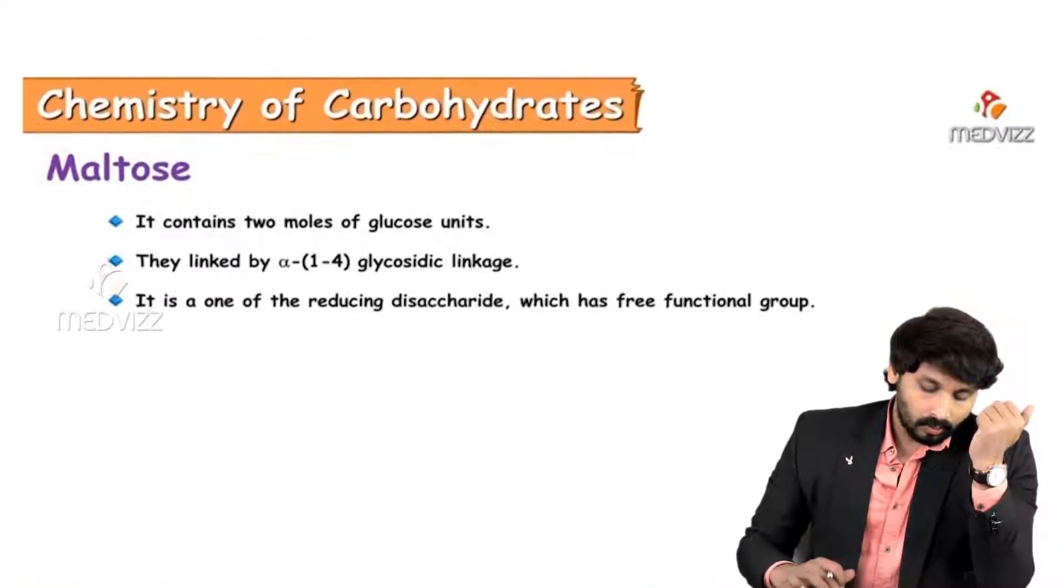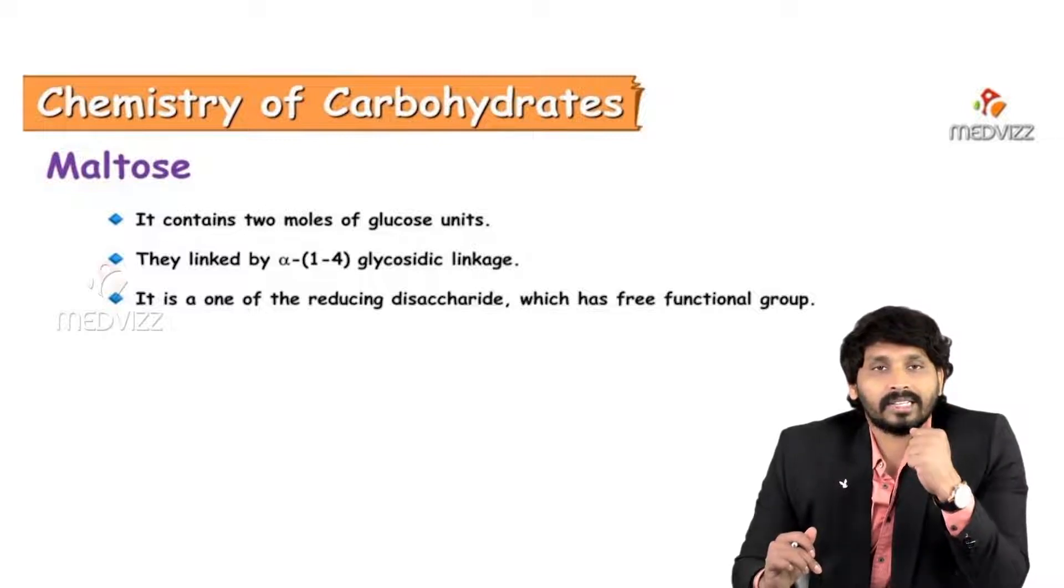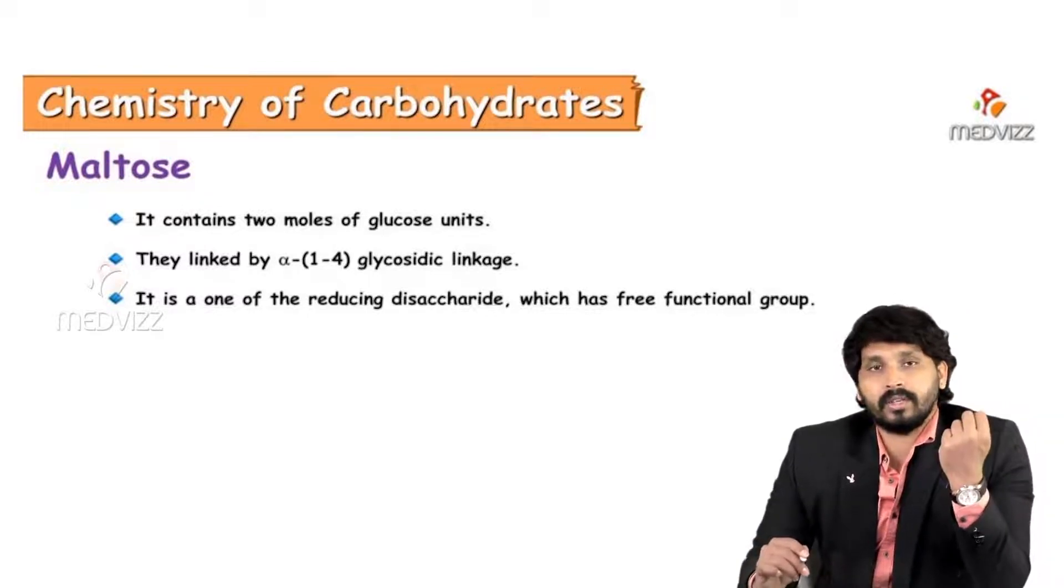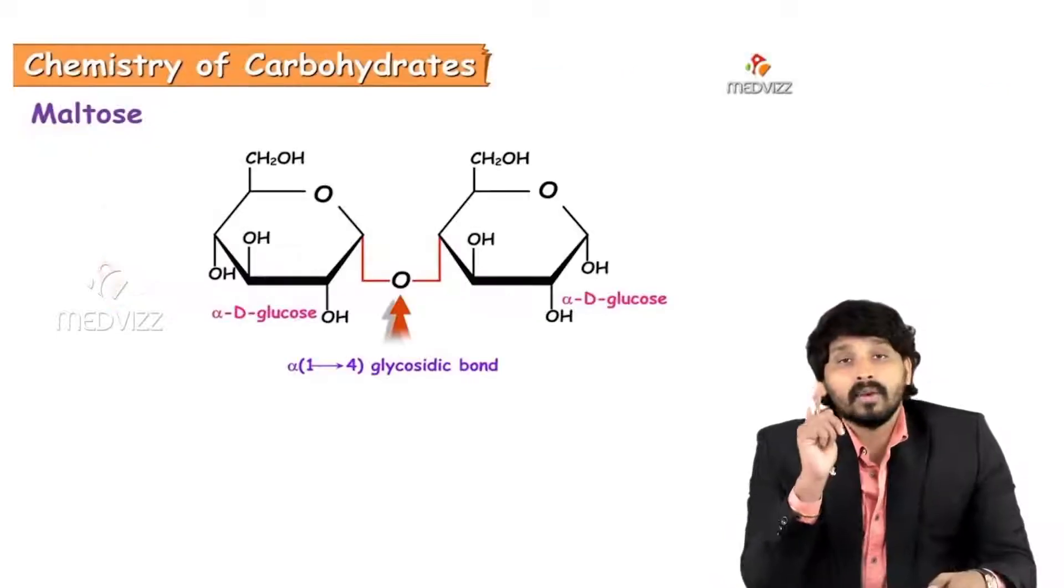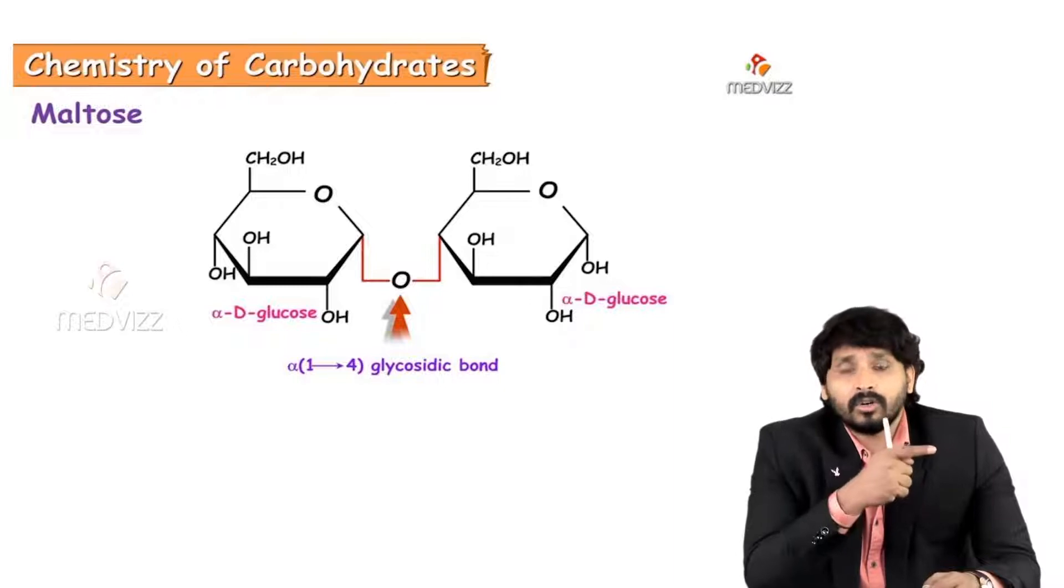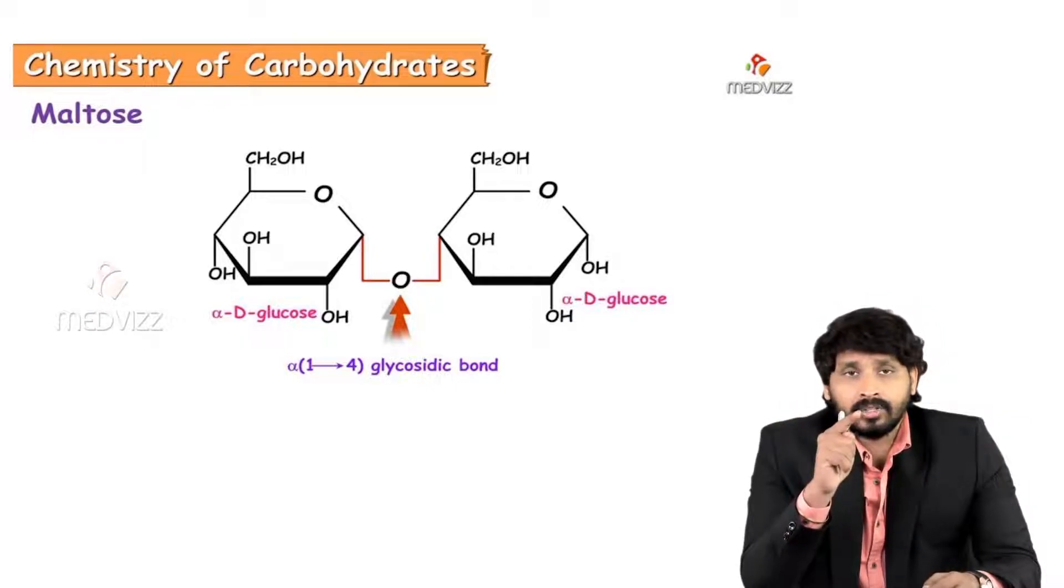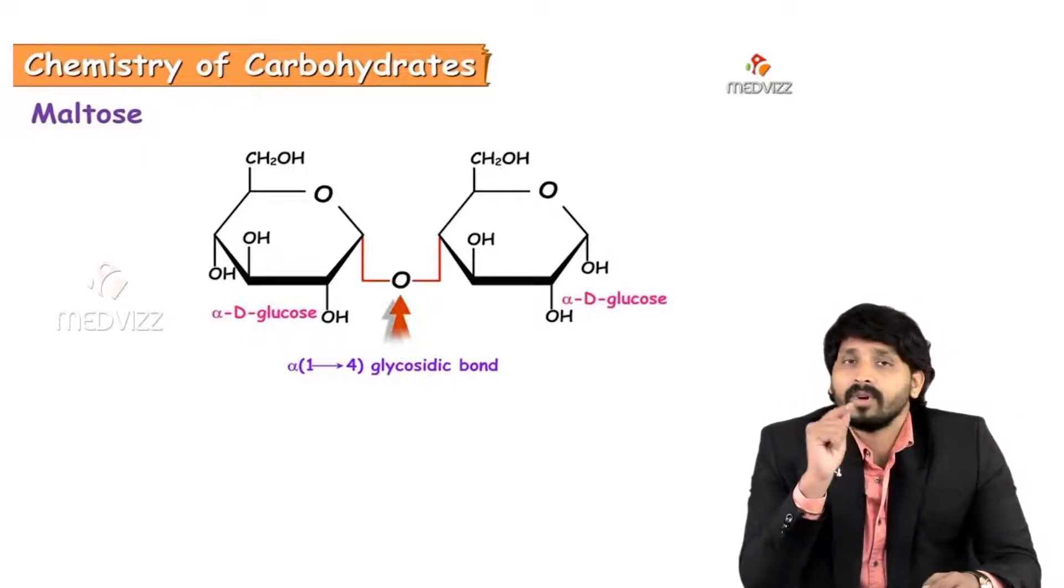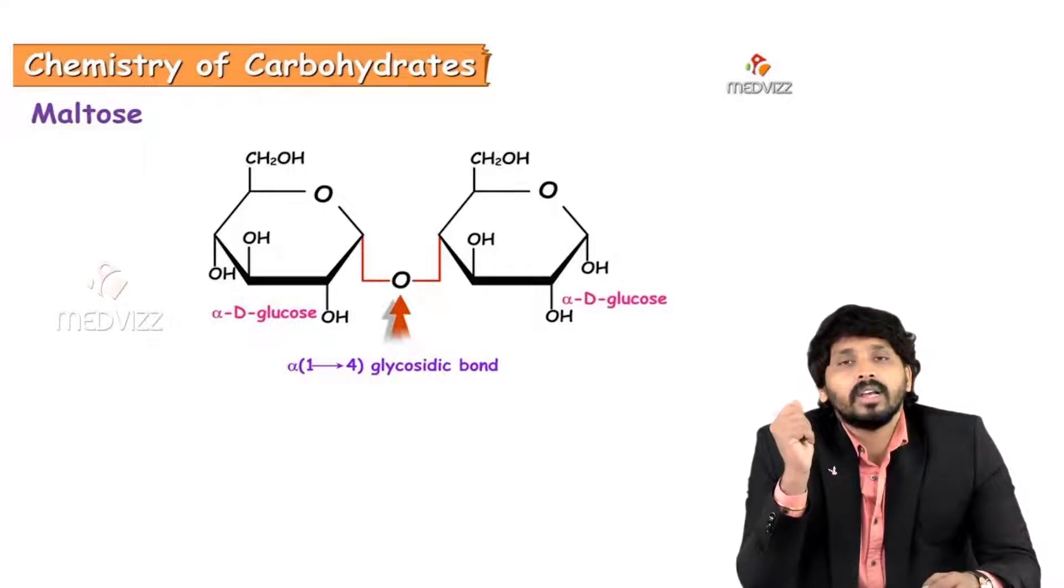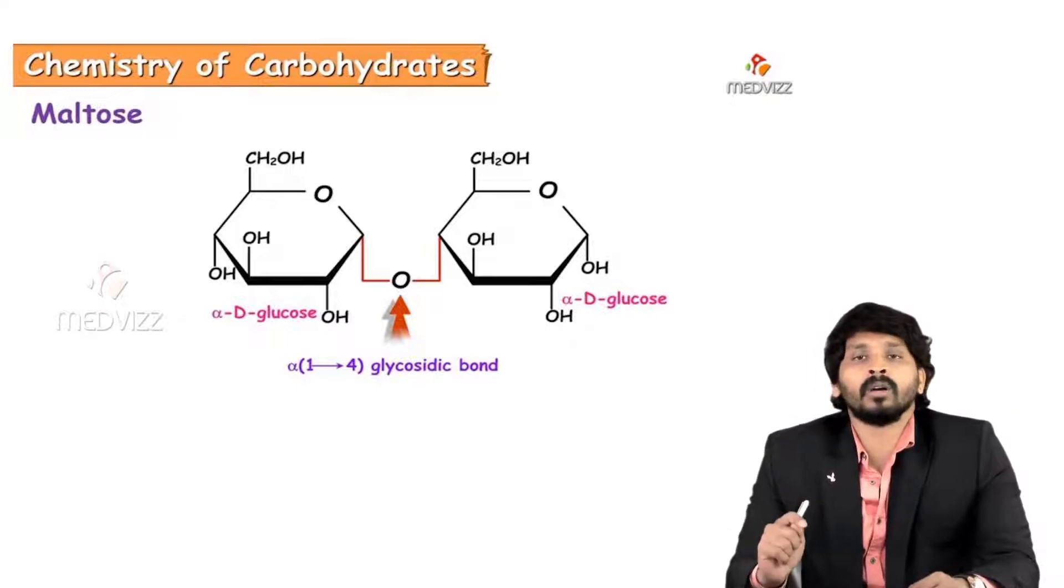First one by one we will discuss maltose. Maltose is a type of disaccharide which consists two monosaccharides and these two monosaccharides are glucose units. And the linkage is alpha 1,4 glycosidic linkage. That means first carbon hydroxyl group of first glucose and fourth carbon hydroxyl group of second glucose involved in the linkage. It is one of the reducing disaccharide because it is having a free functional group in the other side of the second glucose unit.